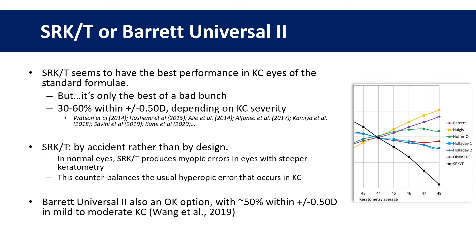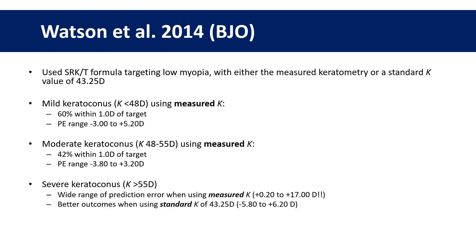The Barrett Universal, which is one of the most accurate formulae in normal eyes, is also okay in keratoconus, but it's still not great. Martin Watson et al. from Moorfields published a really important paper in the BJO a few years ago highlighting the problems with IOL calculations in keratoconus — I'd highly recommend reading it. Using the SRK/T, they showed that results varied according to severity of keratoconus. Even in mild keratoconus with a K of less than 48 dioptres, prediction errors ranged from minus 3 to plus 5. In severe keratoconus — a keratometry of 55 dioptres or more — errors were huge, and they recommended abandoning the measured K altogether and using a standard value of 43.25 instead. But even with this approach, accuracy was pretty poor.